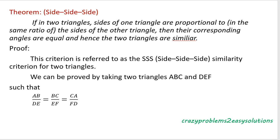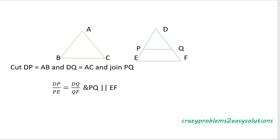The proof is done by taking two triangles ABC and DEF such that the given condition is that the sides are proportional: AB divided by DE equals BC divided by EF equals CA divided by FD. Now cut DP equal to AB and DQ equal to AC, so AB equals DP and AC equals DQ. In triangle DEF, P is a point on DE and Q is a point on DF. Now join the line PQ.